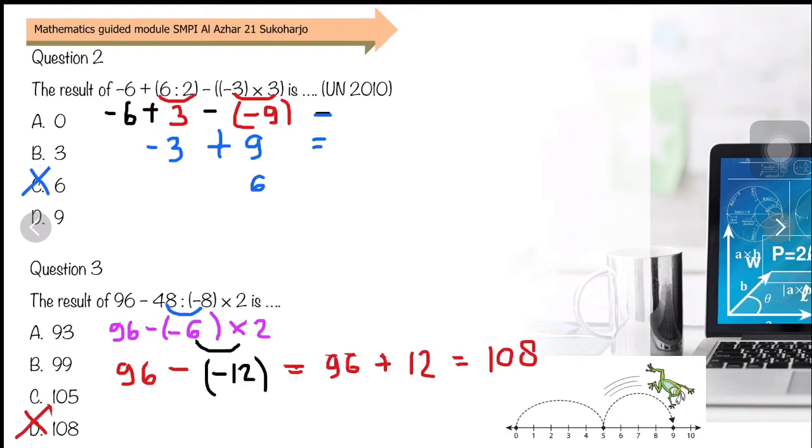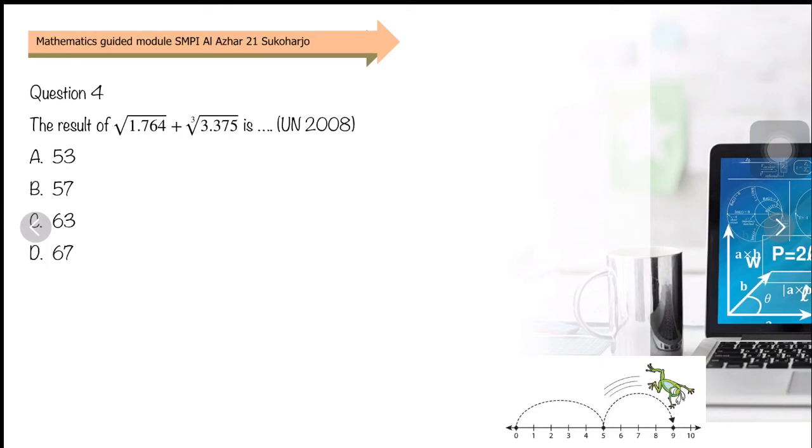Question 4: You must remember square roots and cube roots. The method is to look at the last digit. For square root of 1,764, the last digit is 4. What number squared gives 4? It could be 2 or 8. We know 40 squared is 1,600, and 1,764 is more than that, so it must be 40-something. Let's try 42 or 48.